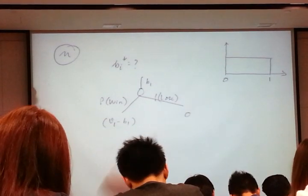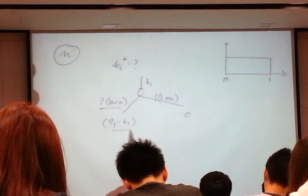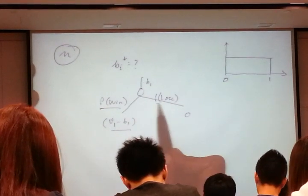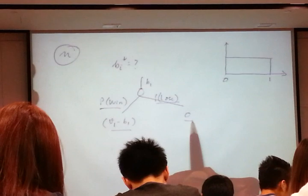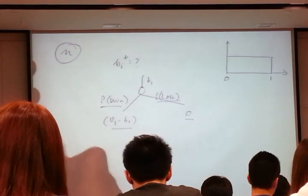After that, I will multiply this probability value with this, plus the probability value with this, that will give me the expected payoff of bidding V1.